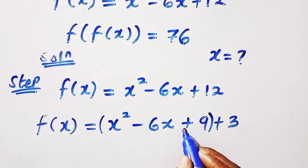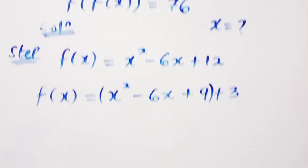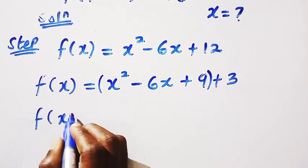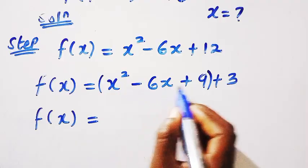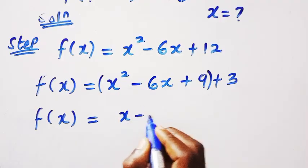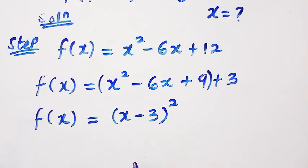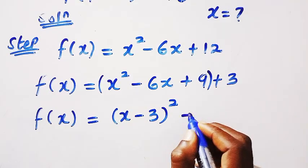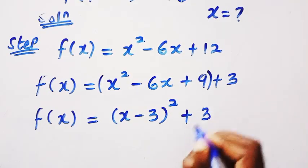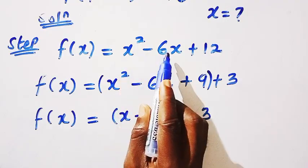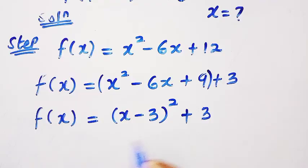So it is easy for us to factorize x squared minus 6x plus 9. So this is perfect. Then we have f of x equals, so x squared minus 6x plus 9 is given as x minus 3 all squared. Then here is plus 3. So if we try to expand this, we are going to get x squared minus 6x plus 12. So it has been written in a vertex form.